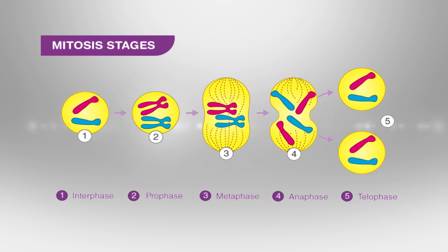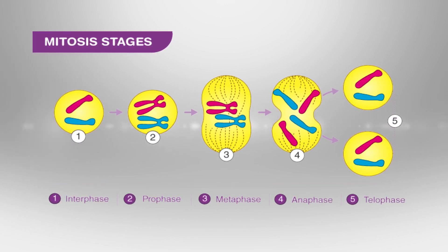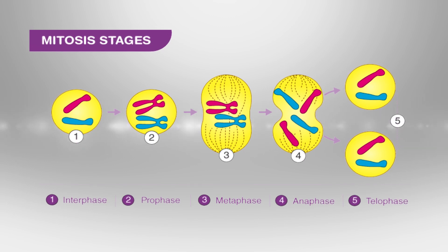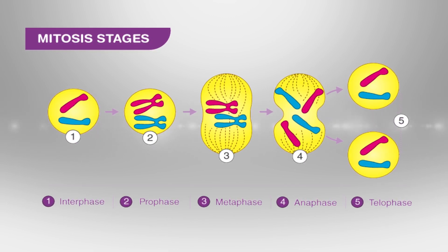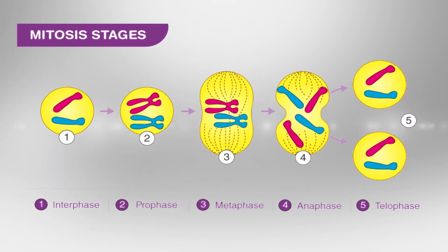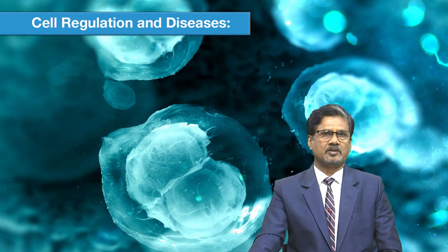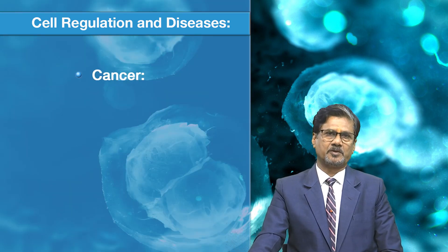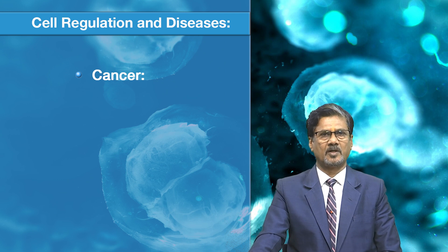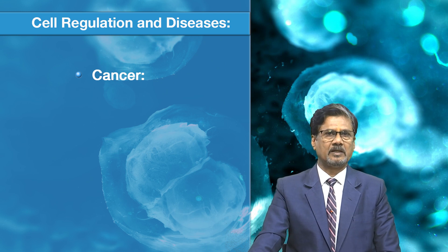The mitotic phase includes mitosis (nuclear division) and cytokinesis (cytoplasmic division), resulting in two genetically identical daughter cells. For cell regulation and diseases, cancer occurs when cell division is uncontrolled — there is no control over the number of cells produced — leading to uncontrolled cell growth.